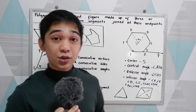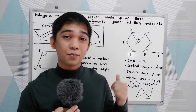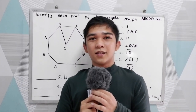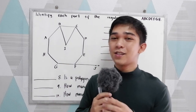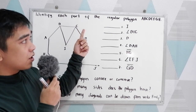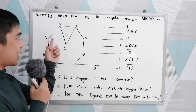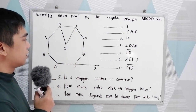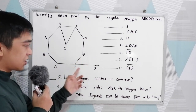Now let us try to solve some problems regarding these terms and the polygon. We will answer exercises to identify each part of a regular polygon with vertices A, B, C, D, E, F, G, H, with center I and an exterior angle.